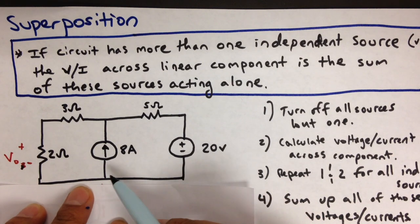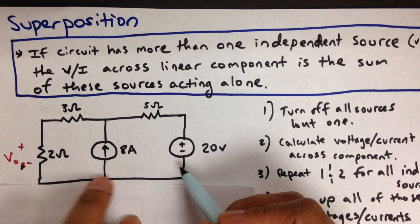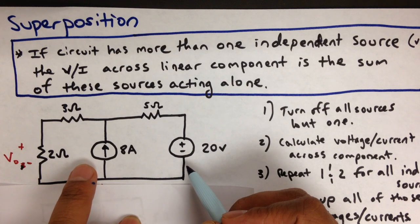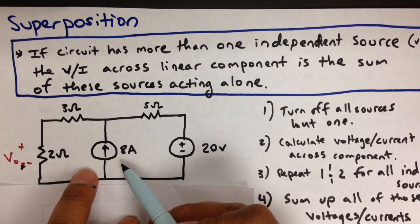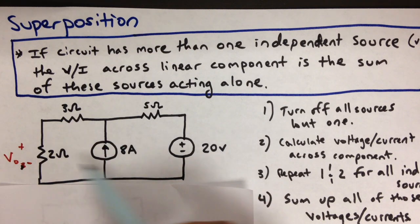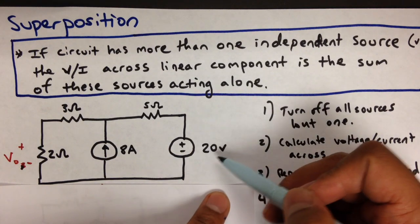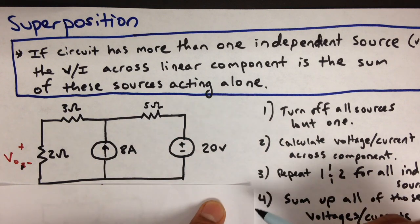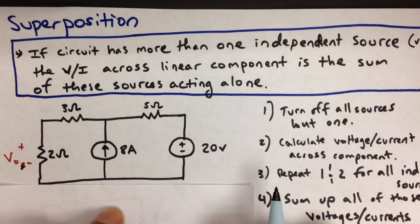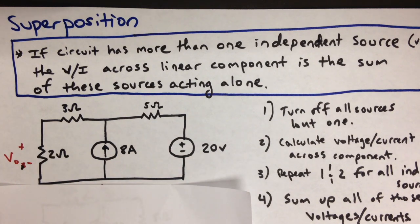So in our example, we want to find the voltage across that resistor, and we have multiple independent power sources. We have an 8 amp current source, and it's independent because it's going to be 8 amps independent of anything else going on here. And we have a 20 volt independent voltage source. It's going to be 20 volts, not dependent on anything else around there. So the question is, if you have these multiple sources, how do you figure out something like voltage across here?